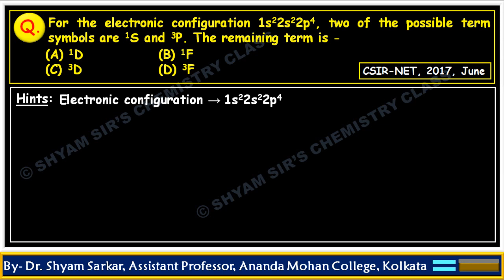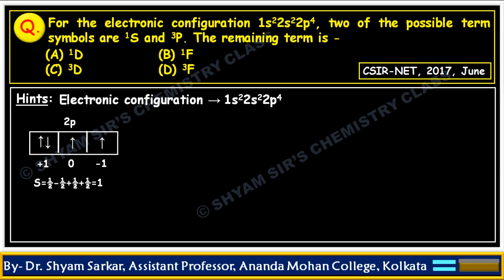For the 2p⁴ configuration, four electrons are there. The electronic arrangement of 2p orbitals in the ground state can be seen as 2, 1, 1 — distributed across px, py, and pz orbitals. Here S = +½ − ½ + ½ + ½, so S = 1, and spin multiplicity 2S+1 = 3. L equals the summation of ml, which is 1, indicating symbol P. So the term symbol becomes 3P — which is already given.